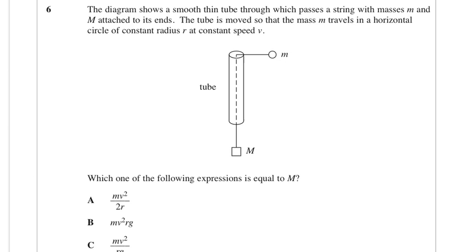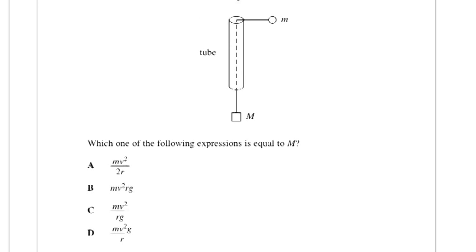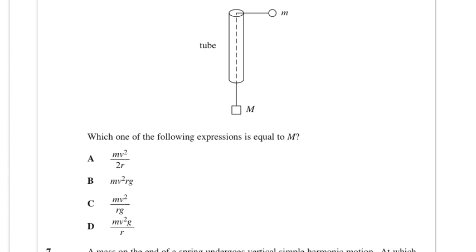The diagram shows a smooth thin tube through which passes a string with masses M and m attached to its ends. The tube is moved so that the mass travels in a horizontal circle of constant radius R at constant speed V. Which expression is equal to M? We know if it's moving in a circle, the centripetal force which is mg will equal mv squared over r. So we want M would be mv squared over rg, which is option C. The key thing here is that the centripetal force is being provided by the weight force of this M here.